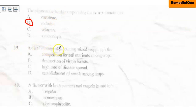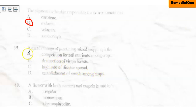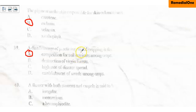Question 39: An advantage of practicing mixed cropping is — A. Competition for soil nutrients among crops. Mixed cropping means growing different types of crops on the same piece of land at the same time. Because each crop has different nutrient requirements, there is always competition among the crops — and that is a disadvantage. So the correct option is option A, competition for soil nutrients among crops, which is actually a disadvantage of mixed cropping.